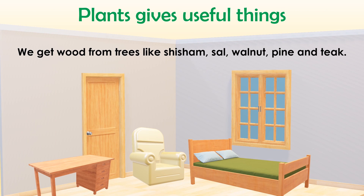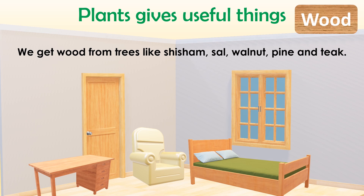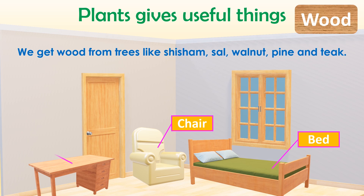Plants give us useful things like wood. We get wood from trees like sesame, sal, walnut, pine and teak. Wood is used to make beds, chairs, tables, doors and windows.